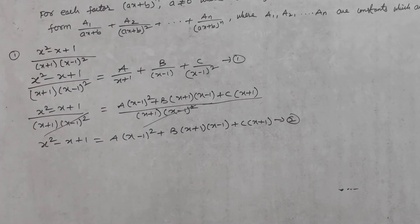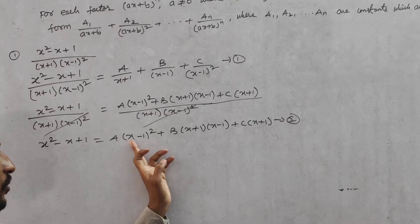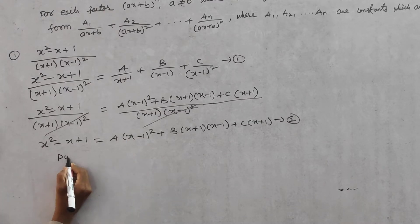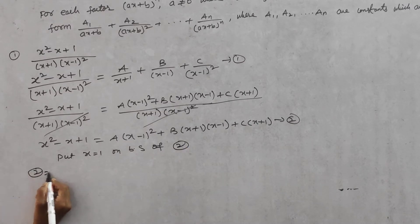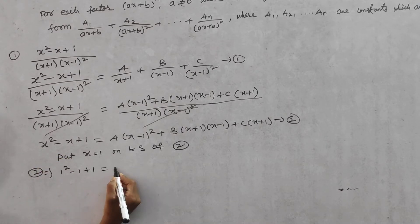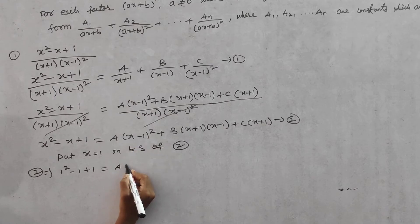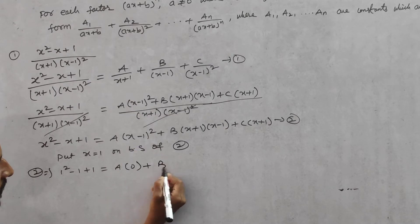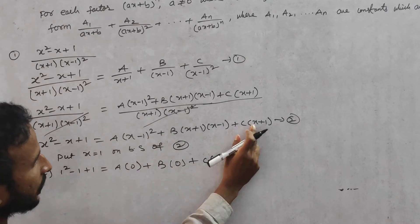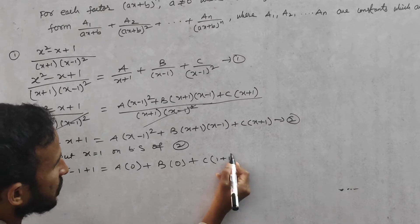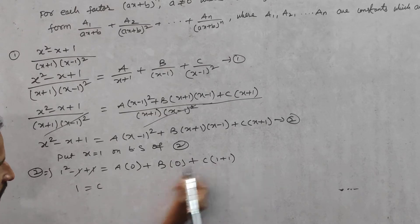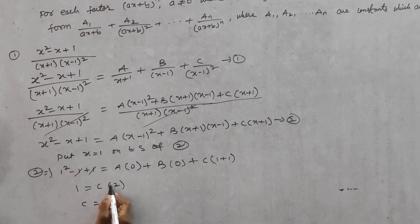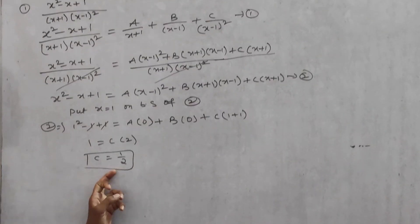Using the substitution method, put x = 1 in equation 2: 1 - 1 + 1 = A(0)² + B(2)(0) + C(2). The A and B terms become 0, so 1 = 2C, which gives C = 1/2.